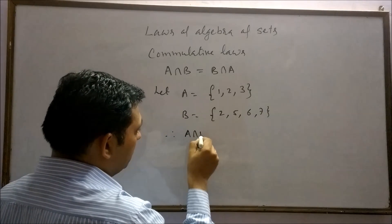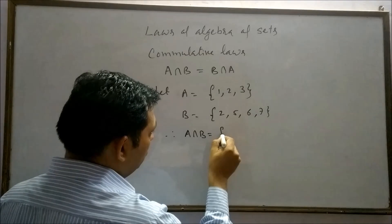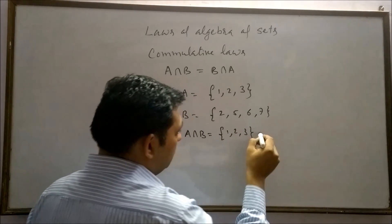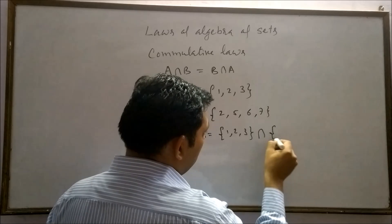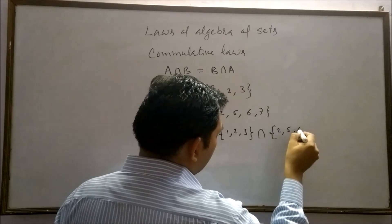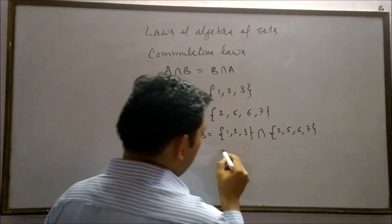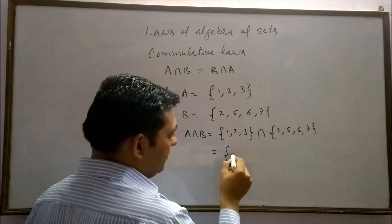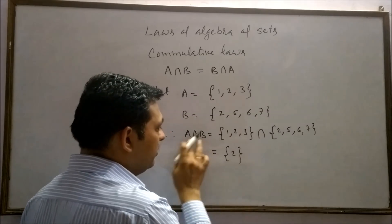Therefore, A intersection B will equal {1, 2, 3} intersection {2, 5, 6, 7}. What is common here? 2 is common here. It means the set containing element 2 is A intersection B.